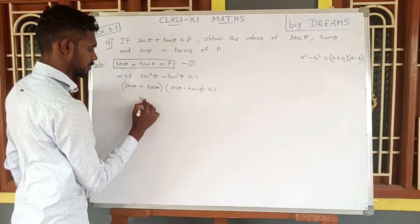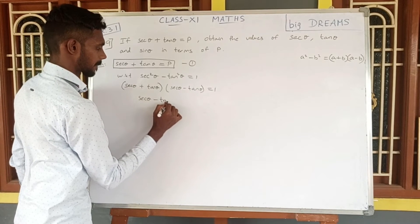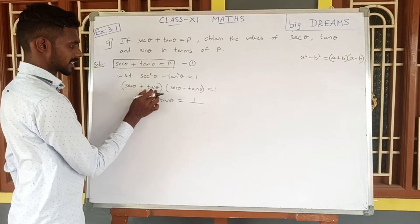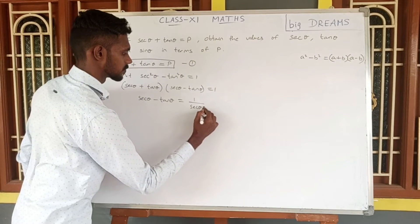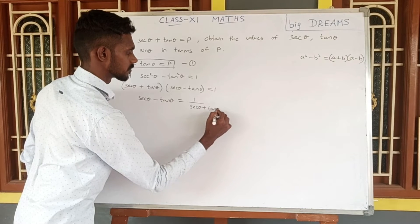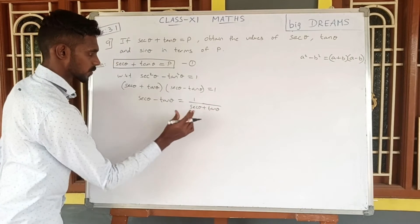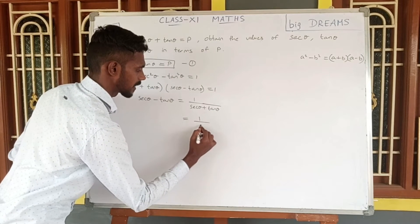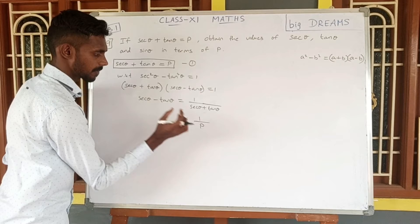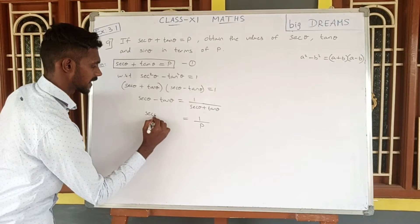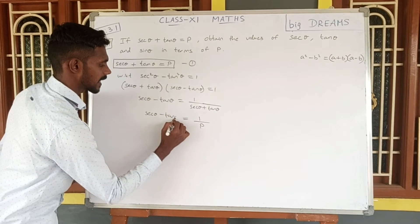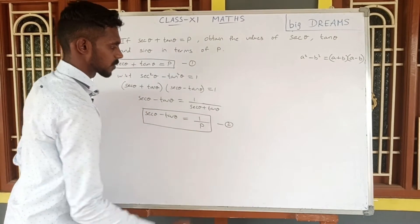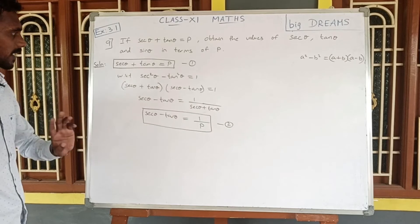Now consider secant theta minus tan theta. Since secant theta plus tan theta equals P, we replace it and get secant theta minus tan theta is equal to 1 by P. Let this be condition number 2.